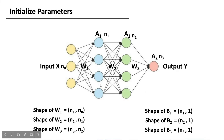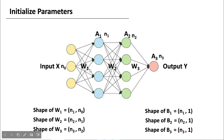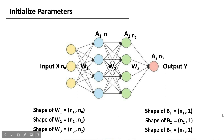We'll consider an example of a three-layer neural network — by three layers I mean I'm not counting the input layer. The shape of W will be equal to the number of neurons in the next layer comma the number of neurons in the previous layer. So for example, the shape of W2 is n2 comma n1. And the shape of B2 is n2 comma 1 — the number of neurons in that layer, comma 1.